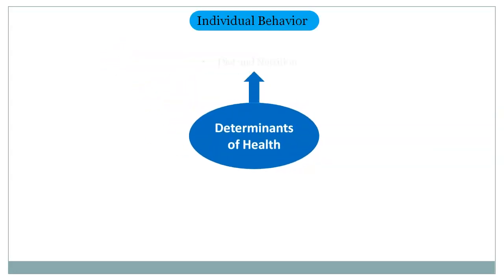The first factor or determinant is individual behavior. This includes diet and nutrition, physical activity, and substances used. Diet and nutrition refers to the eating habits and nutritional choices of a person which determine their health. Physical activity like exercise and overall physical fitness is also an important determinant. Substances used like tobacco, alcohol and drug consumption — all these habit-forming agents will affect health.